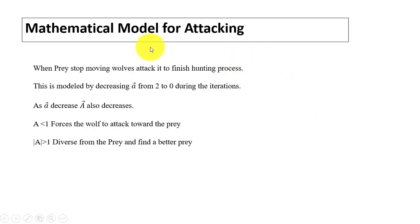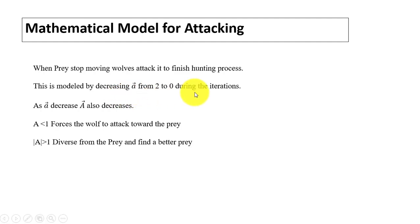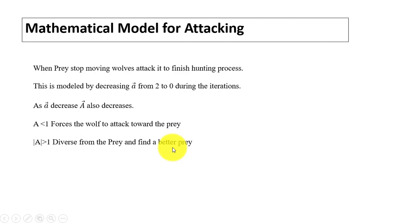The mathematical model for attacking works as follows: when the target stops moving, the wolves attack to finish the hunting process. To model this, the value of 'a' decreases from 2 to 0 during each iteration. As 'a' decreases, vector A also decreases. When A is less than 1, the wolves attack; when A is greater than 1, they search for a better prey. In each iteration, both capital A and small 'a' are updated.